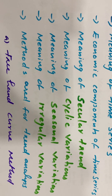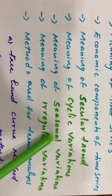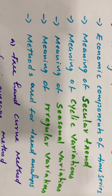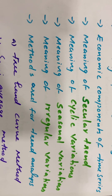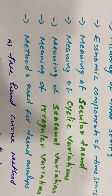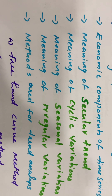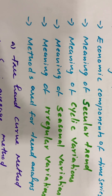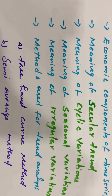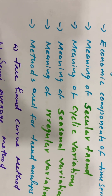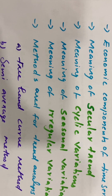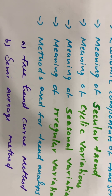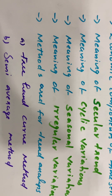Irregular variations are due to some irregular circumstances which are beyond the control of human beings. These types of factors are unforeseen and unpredictable, but they are significant like other fluctuations.